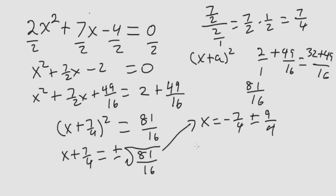So we have x is equal to minus 7 plus 9 over 4, minus 7 over 4, plus 9 over 4, which is equal to 2 over 4, which is equal to 1 half.